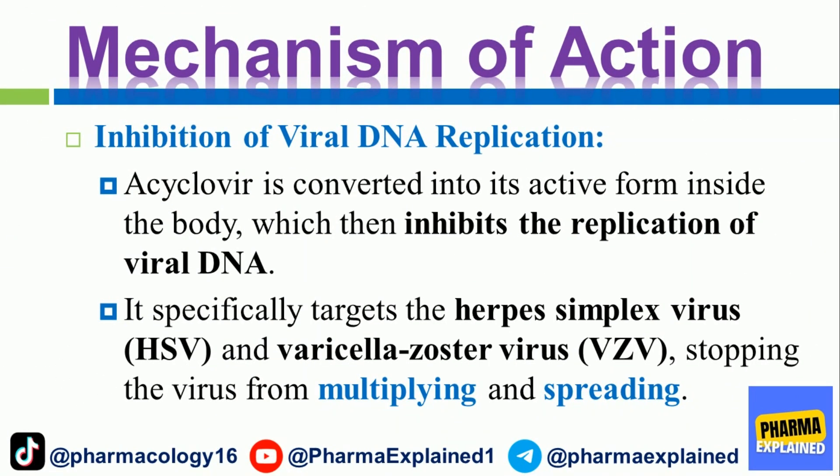Mechanism of action: inhibition of viral DNA replication. Acyclovir is converted into its active form inside the body, which then inhibits the replication of viral DNA. It specifically targets the herpes simplex virus (HSV) and varicella-zoster virus (VZV), stopping the virus from multiplying and spreading.